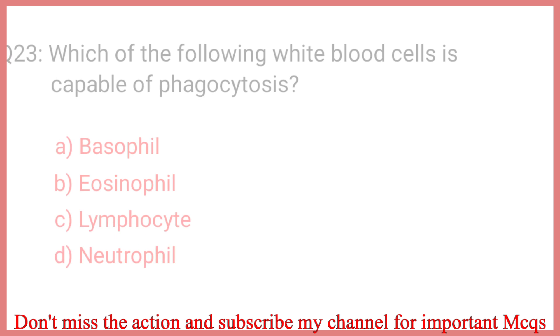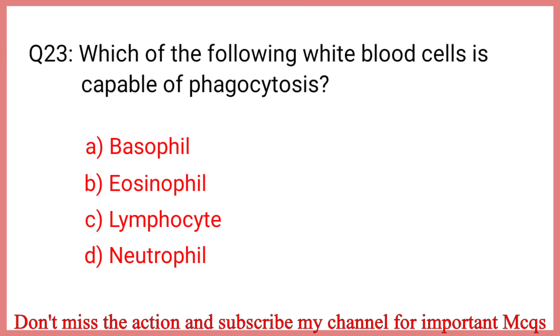Question number 23. Which of the following white blood cells is capable of phagocytosis? The correct answer is Option D: Neutrophil.